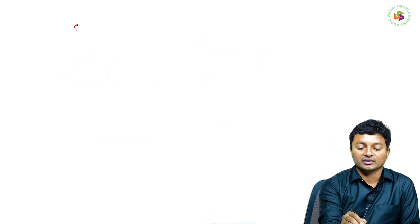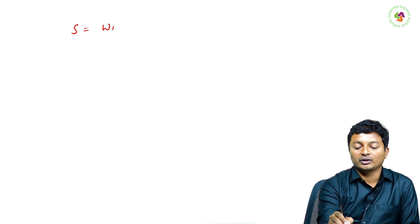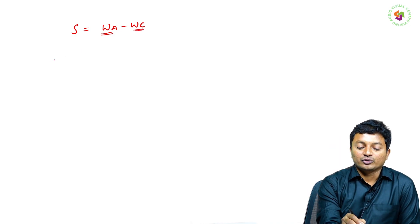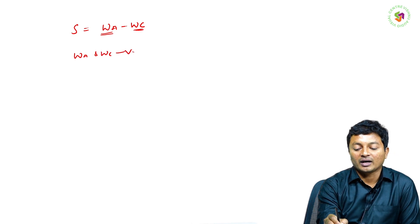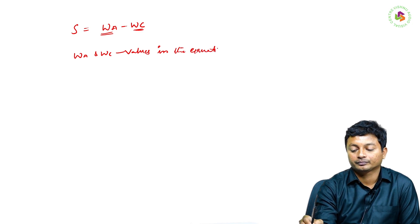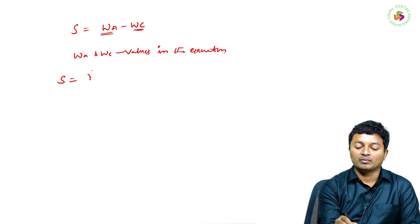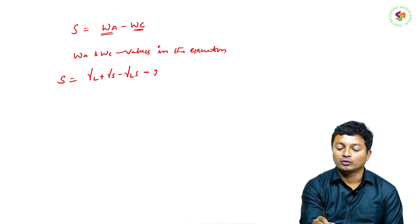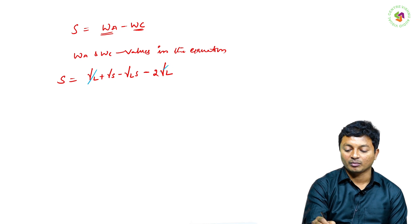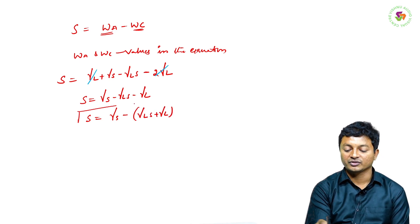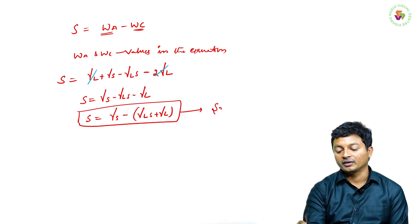The spreading coefficient S equals Wa minus Wc, that is work done at adhesive force minus work done at cohesive force. Substituting: S equals (gamma-l plus gamma-s minus gamma-ls) minus 2 gamma-l. One gamma-l cancels, giving the final spreading coefficient equation: S equals gamma-s minus gamma-ls minus gamma-l. Using this equation we can calculate the spreading coefficient.